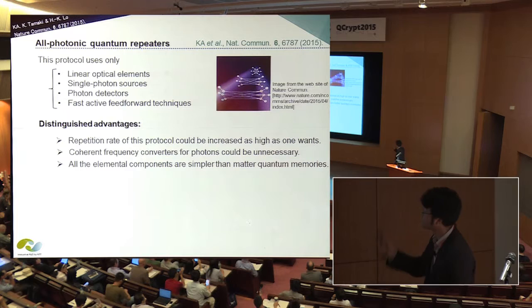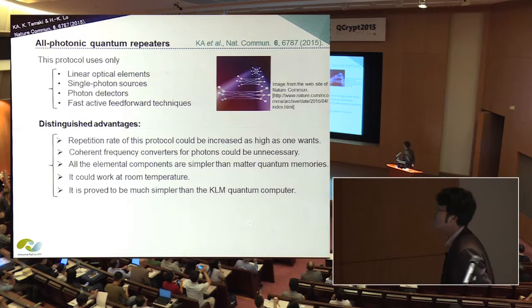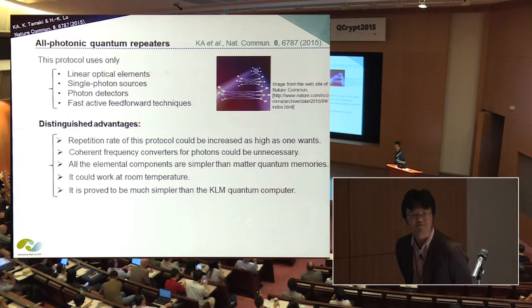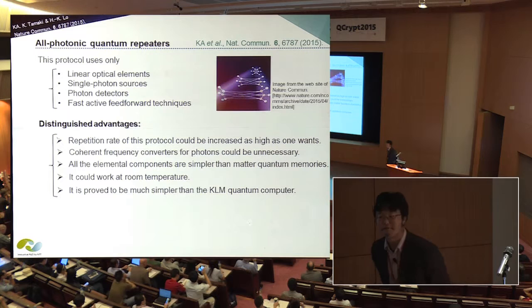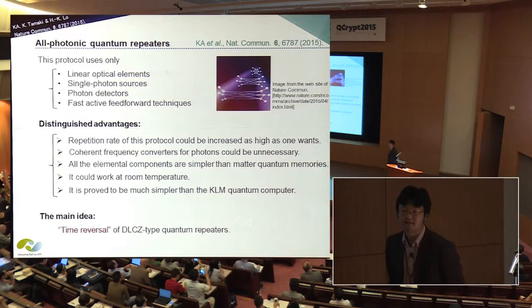Since we just use optical devices, in principle it could work at room temperature. In addition, our protocol is the only scheme proven to be much simpler than a quantum computer by fairly comparing with the optical quantum computer based on the KLM scheme. The main idea is very simple: just take the time reversal of the quantum repeater based on the DLC protocol.